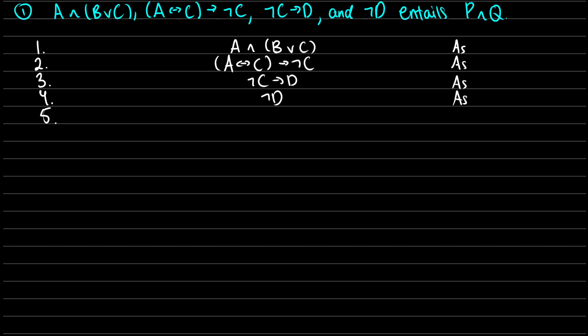First, we need to show that A∧(B∨C), A↔C→¬C, ¬C→D, and ¬D entails P∧Q. So I've set up the first four lines, and now we need to show it entails P∧Q. What we do with entailment is we take the negation of the thing we want to entail, and then we find a contradiction.